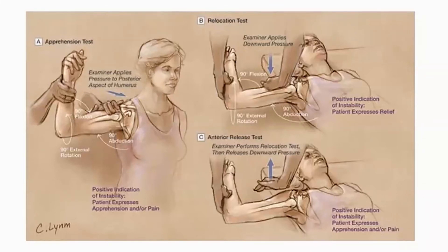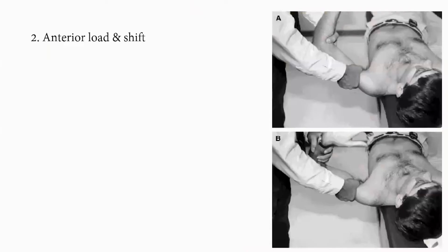Sensitivity markedly increases when apprehension — not pain — is the result. Another test is the anterior load and shift test: a compressive force is applied by one hand to center the humerus on the glenoid fossa, while the other hand produces a translatory force anteriorly or posteriorly. Translation is graded as: translation to the rim, translation over the rim, or subluxation of the humeral head.